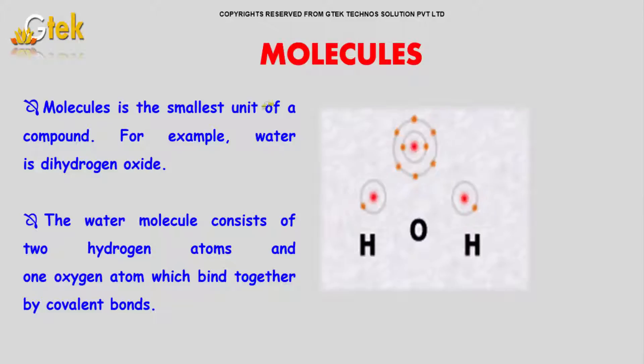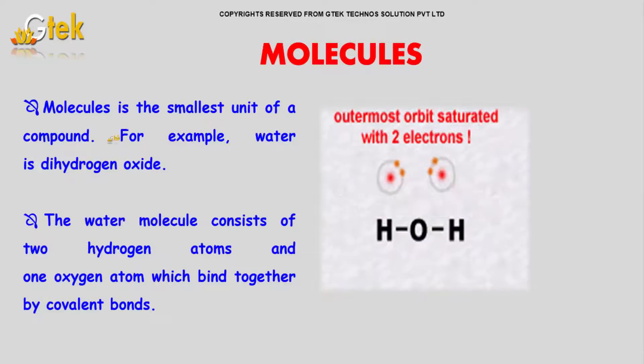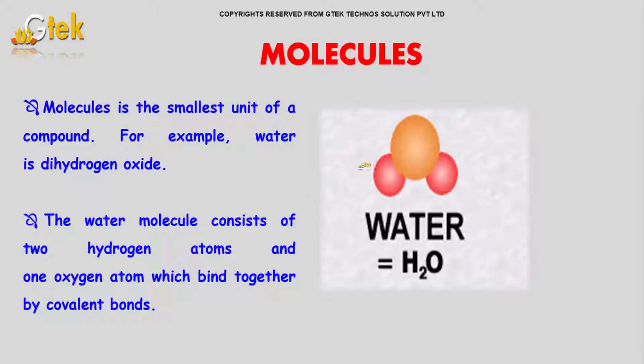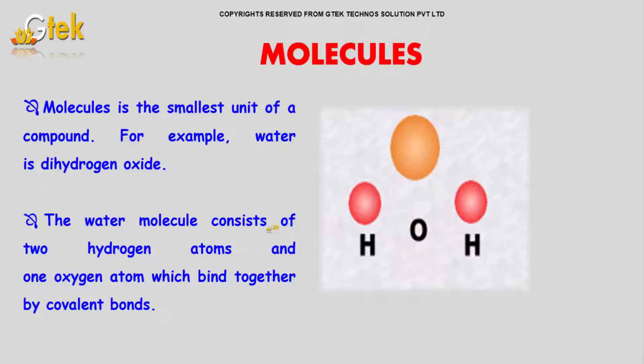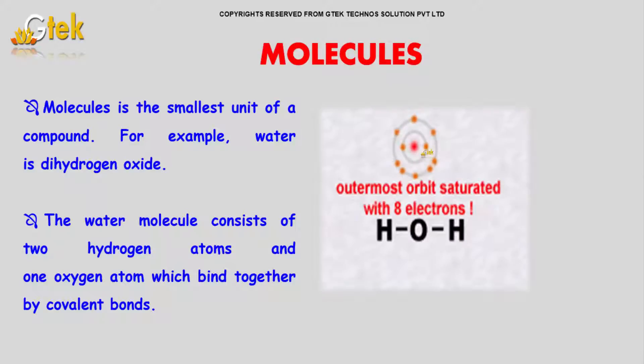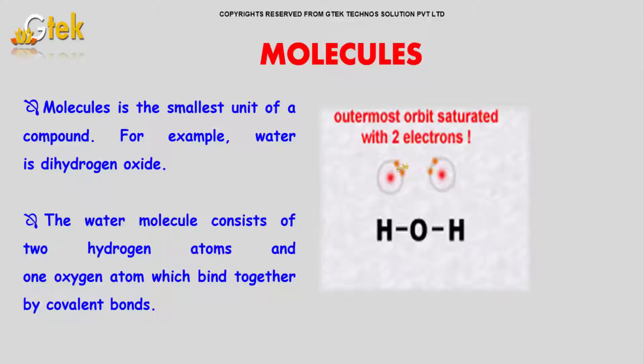Let's discuss molecules. A molecule is the smallest unit of a compound. For example, water is dihydrogen oxide. The water molecule consists of two hydrogen atoms and one oxygen atom which bind together to form a covalent bond.